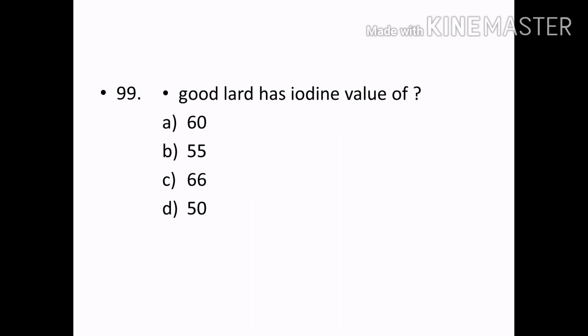Good lard has the iodine value of: Options — 60, 55, 66, 50. Correct answer: Option C — 66.